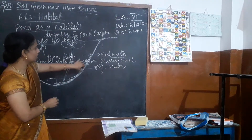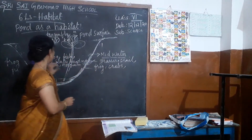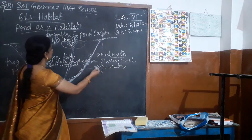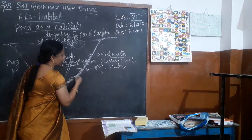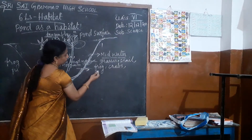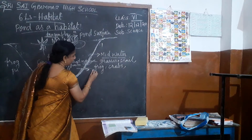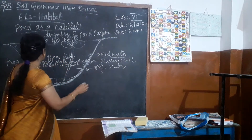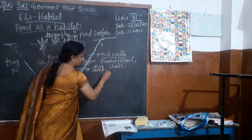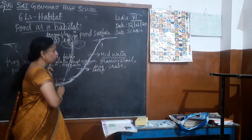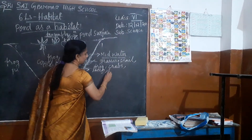In the margins we can see the grasses, snail, frog, and crabs. Other animals will also be present. Leeches are also present at the margins. And the snake also is present.